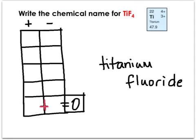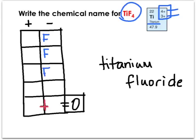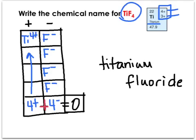Let's walk through TiF4. First, look up titanium on the periodic table — yes, titanium is a multivalent metal with choices of plus four or plus three. I write fluorine four times and titanium once as shown in the formula. Fluorine always has a charge of negative one, so my negative column totals negative four. Therefore my positive column must equal plus four. Since there is only one titanium atom, that titanium must have a charge of plus four. Naming TiF4 gives titanium four fluoride.